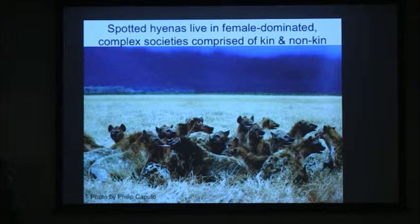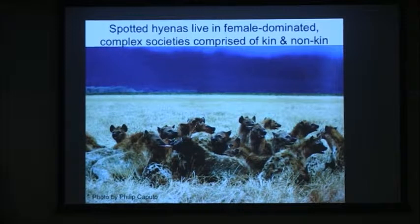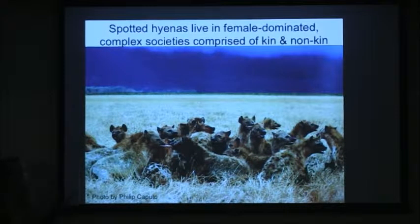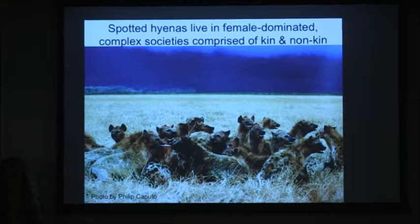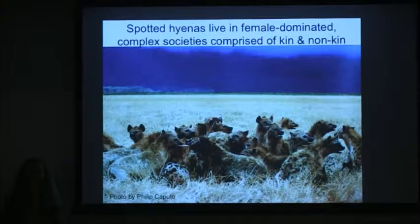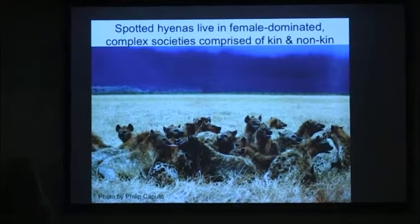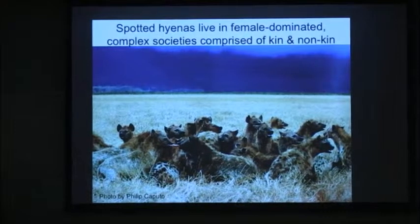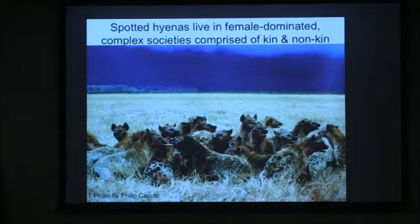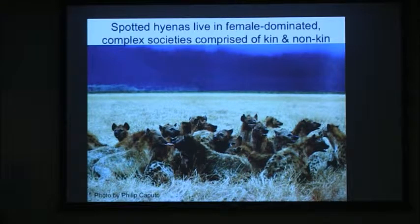They live in large groups and come together under circumstances that allow them to cooperate, but they also compete intensely. There can be up to 120 hyenas in these groups — very social for carnivores. They also have more non-kin in their groups than most carnivores, which usually have all genetic relatives, making them a really interesting group of animals in which to ask about kin selection.